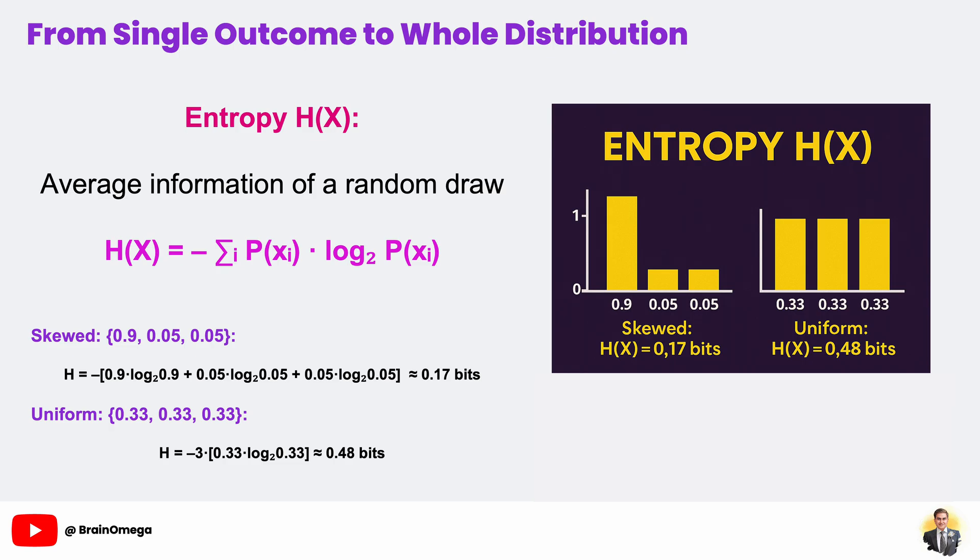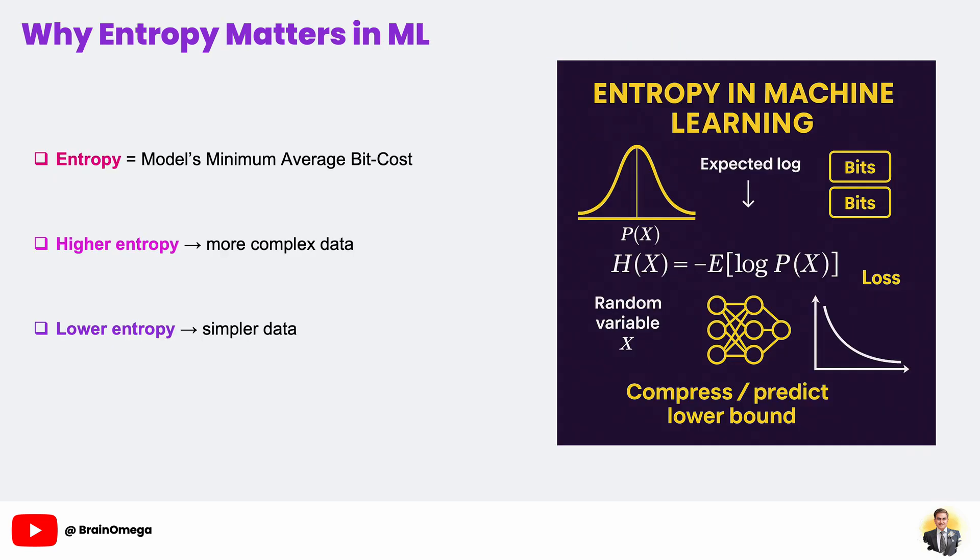Look at our two examples. On the left is a skewed distribution — 0.9, 0.05, 0.05. 90% of the time you see the same outcome, so there's very little uncertainty overall, about 0.17 bits on average. On the right is a uniform distribution — 0.33, 0.33, 0.33. Each outcome is equally surprising, so the average surprise rises to about 0.48 bits. A uniform distribution demands more bits per sample because it's intrinsically more unpredictable. In practice, entropy sets a fundamental lower bound on how well any compression or prediction scheme can perform. You cannot, on average, encode samples in fewer than H(X) bits without losing information.